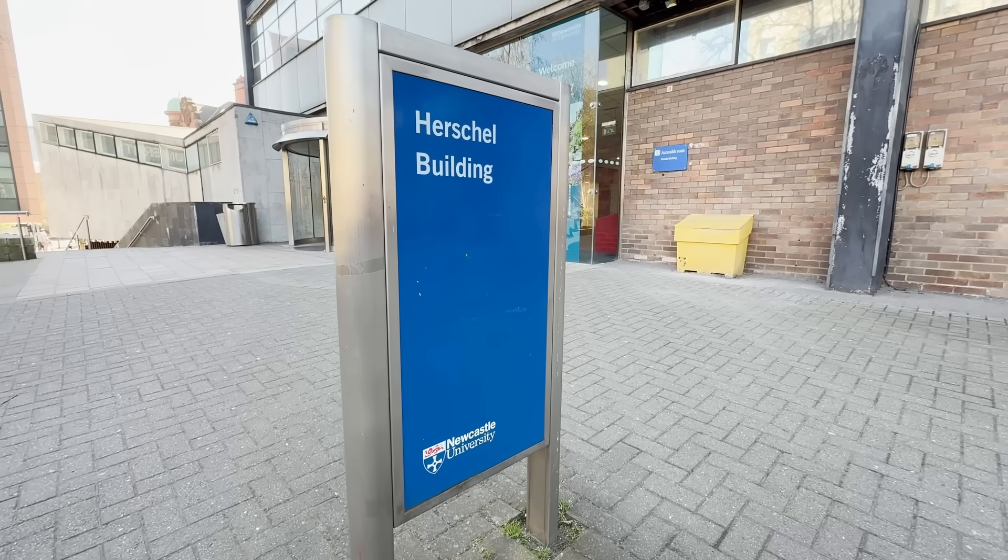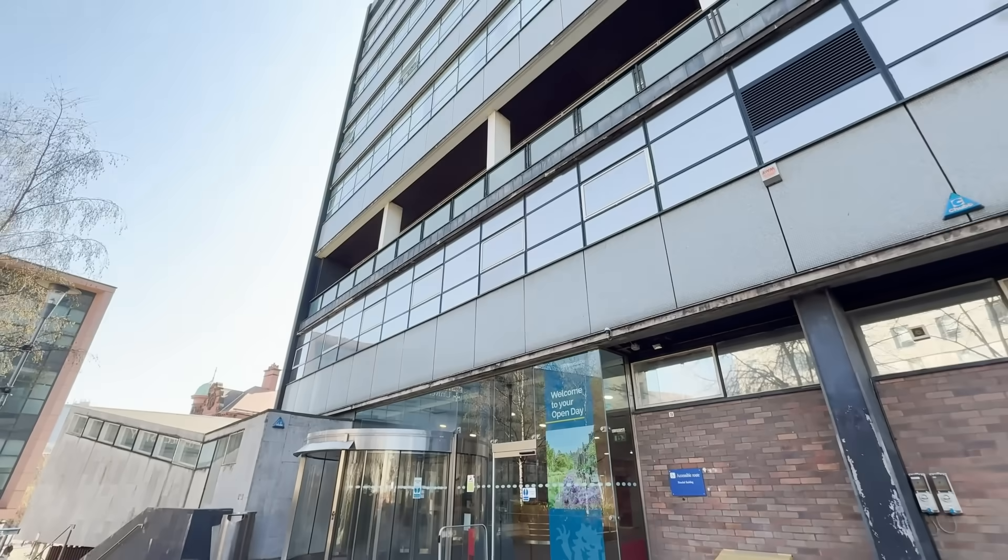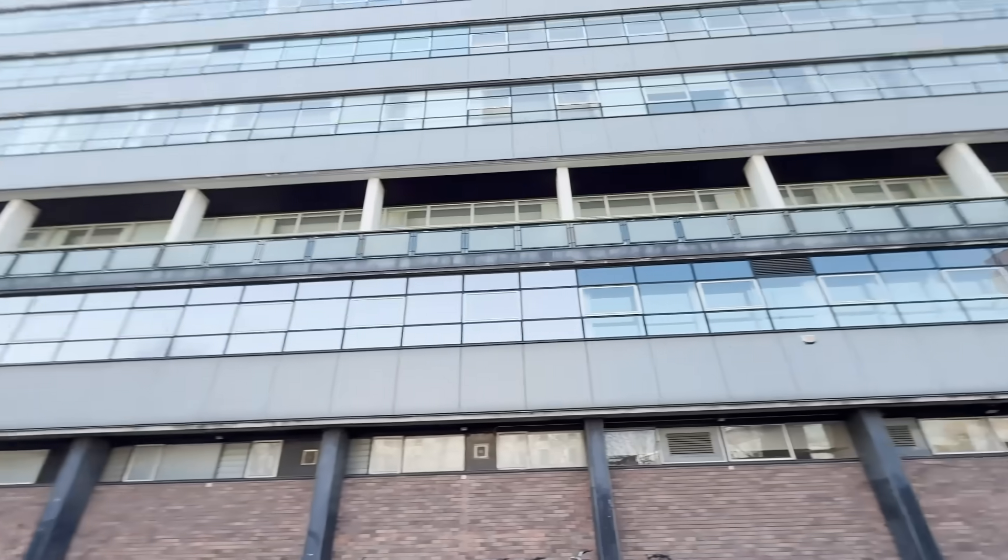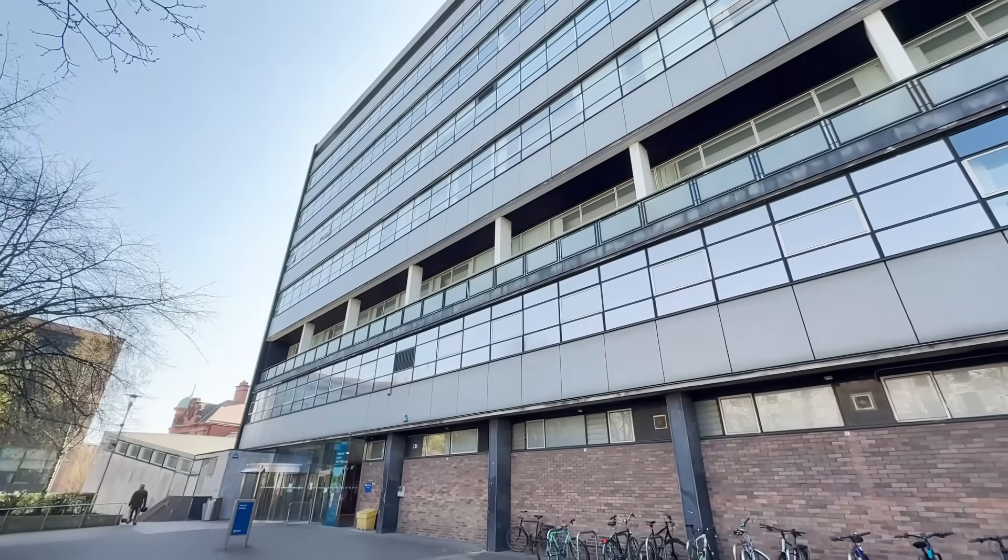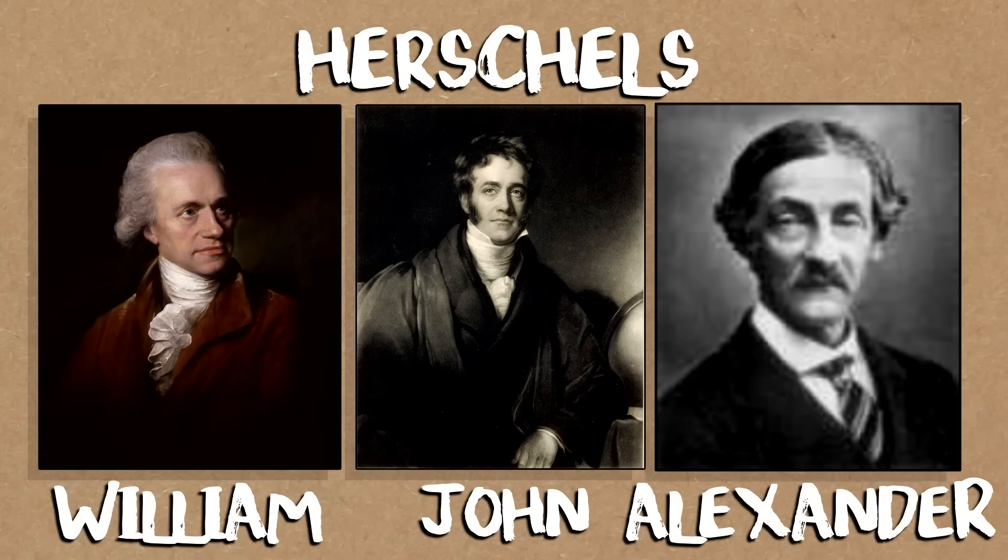We're in the Herschel building which is where Newcastle's School of Math, Stats and Physics is based. Someone said I found this Herschel graph, can we do anything with it? I think it's named after Alexander Herschel, who's like third gen Herscheling. We think that's the Herschel we're named after and this graph was named after him. I don't think he actually found this graph but someone named it for him because he'd thought about these kinds of things.